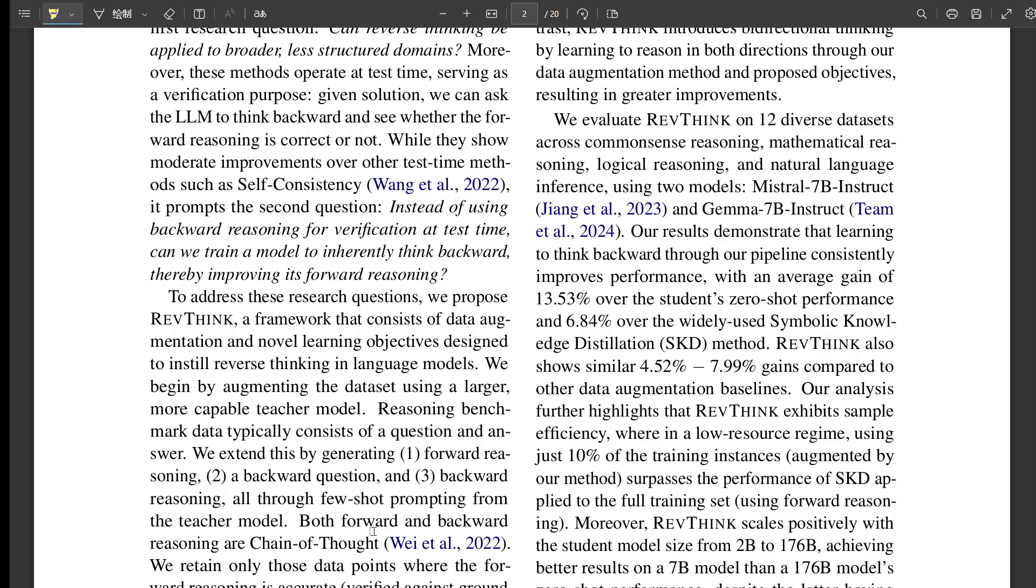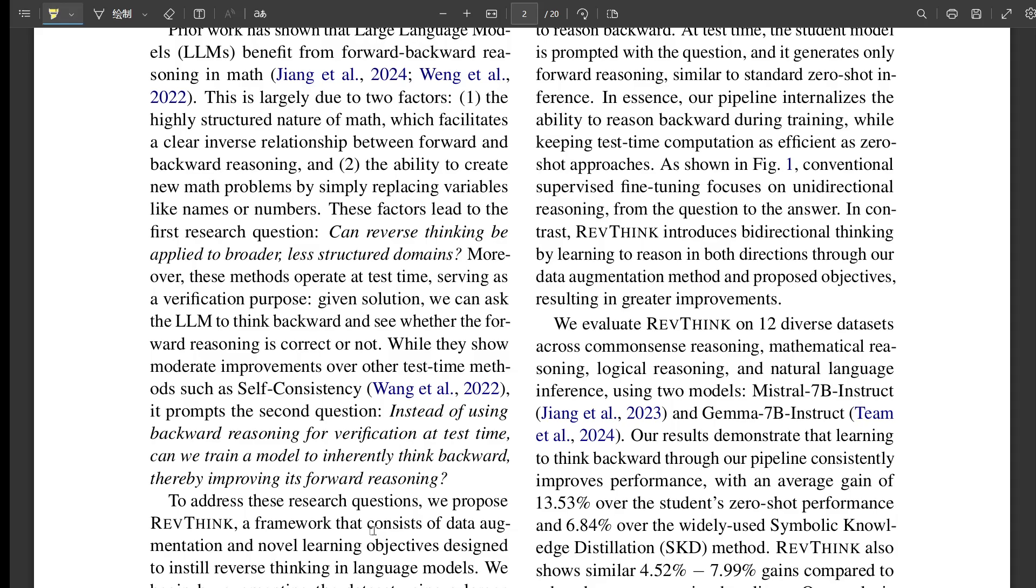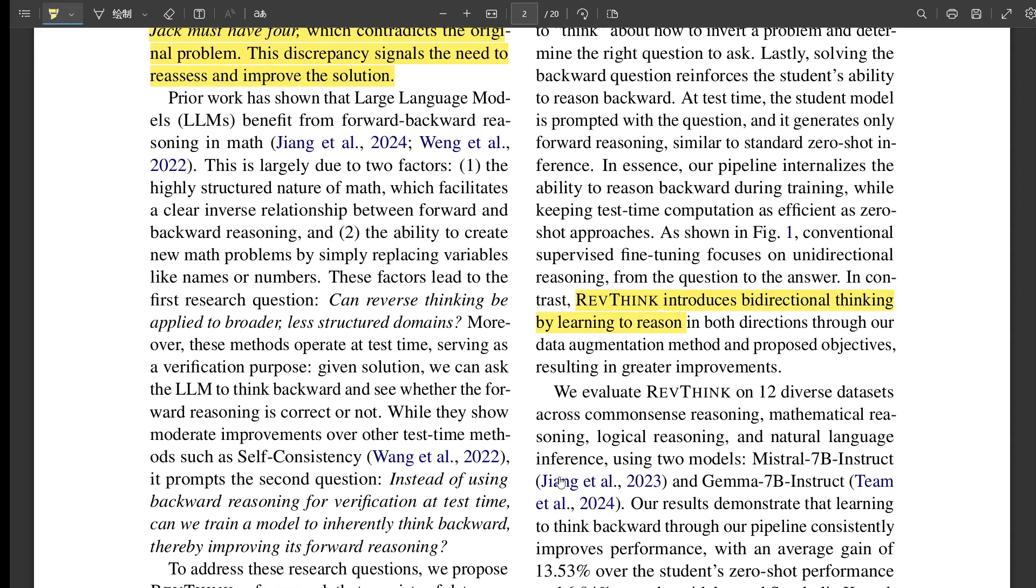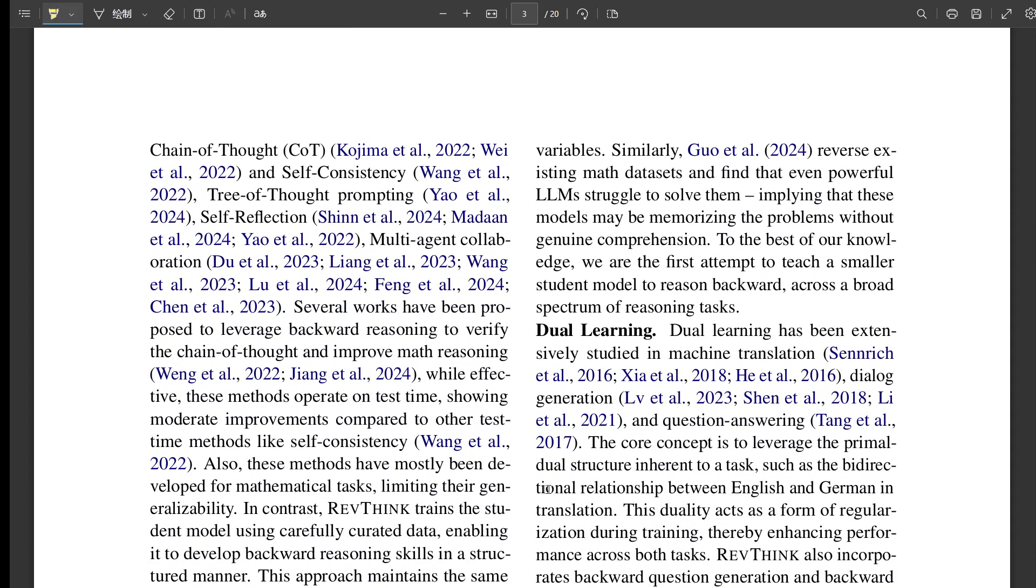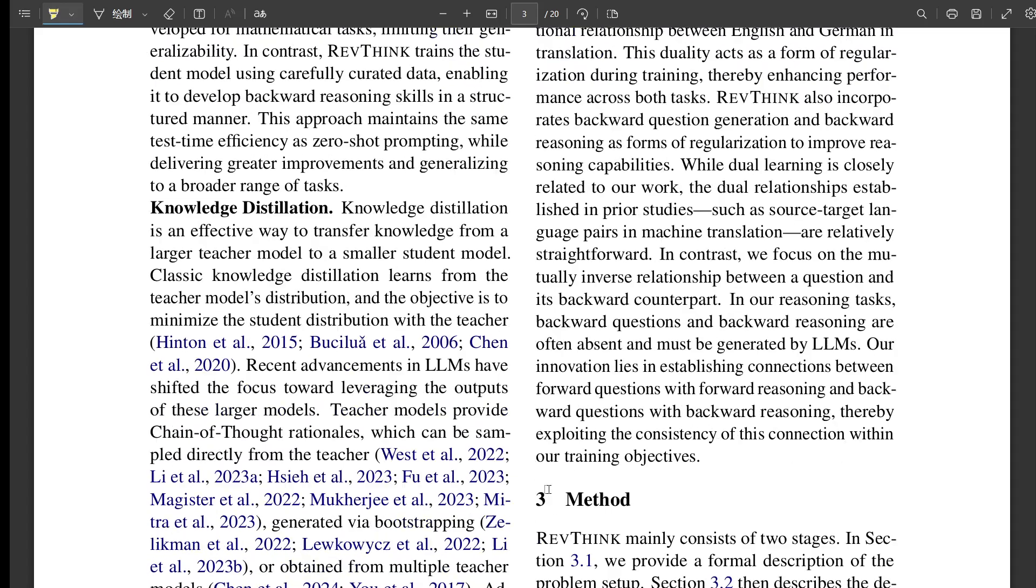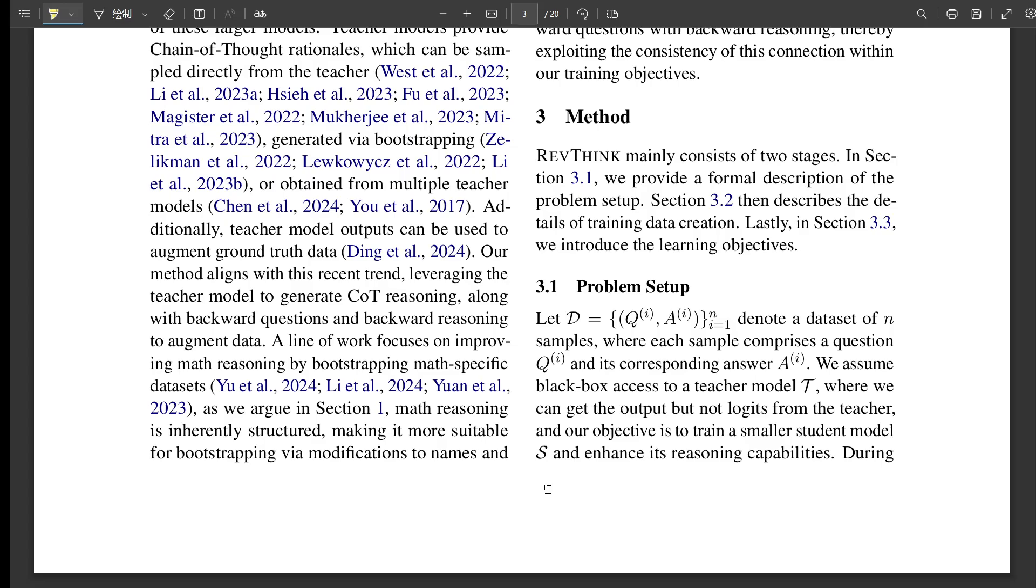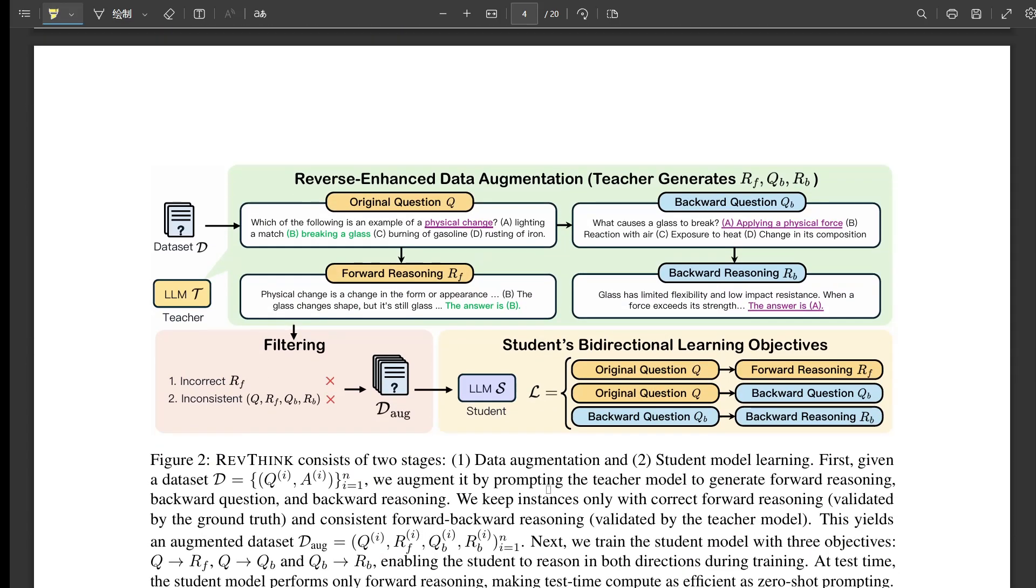On average, Rethink made the student model like 13% better at reasoning tasks compared to just using the regular zero shot prompting. That's pretty good. And it beat other methods too, like knowledge distillation by a lot. But here's the kicker: it did all that while using way less training data. So it's not just better, it's also more efficient. Sometimes it even did better using only 10% of the data compared to other methods that used all of it. You could get the same results with much less effort. That's a big deal. It means we could maybe use these fancy reasoning AIs on devices that don't have as much power.